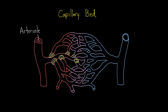The blood is going to come down through the arteriole, and some of it will continue down to another capillary bed. But here we have one right here, so it's going to divert and send some blood this way. Now, the first vessel — this tiny little vessel — is actually not a capillary. We call this a metarteriole.